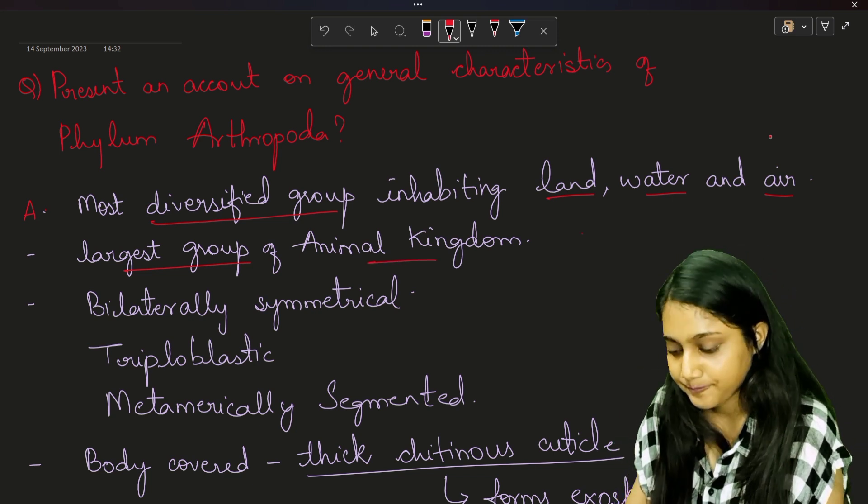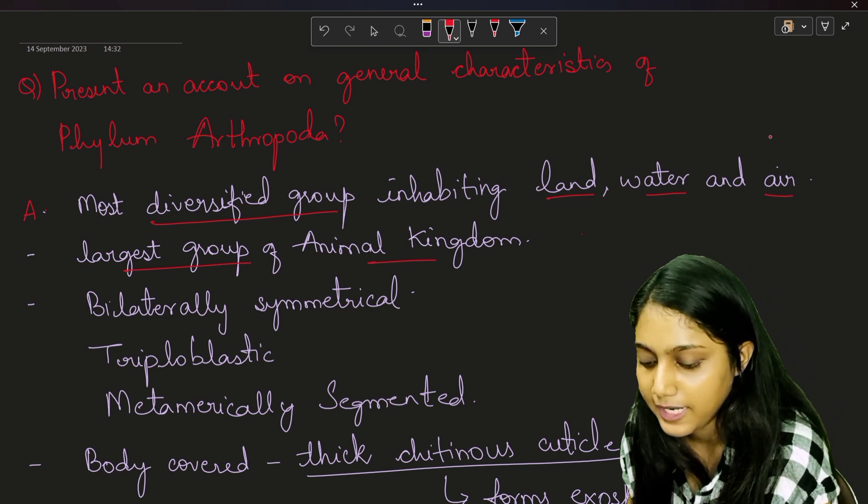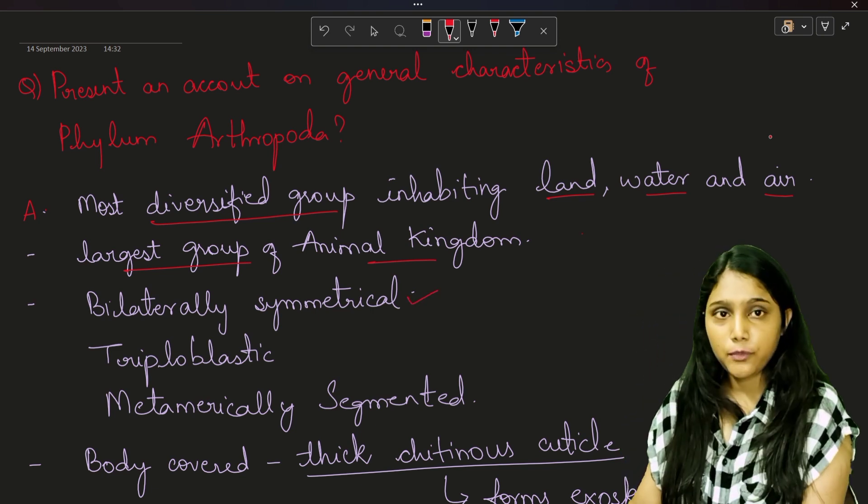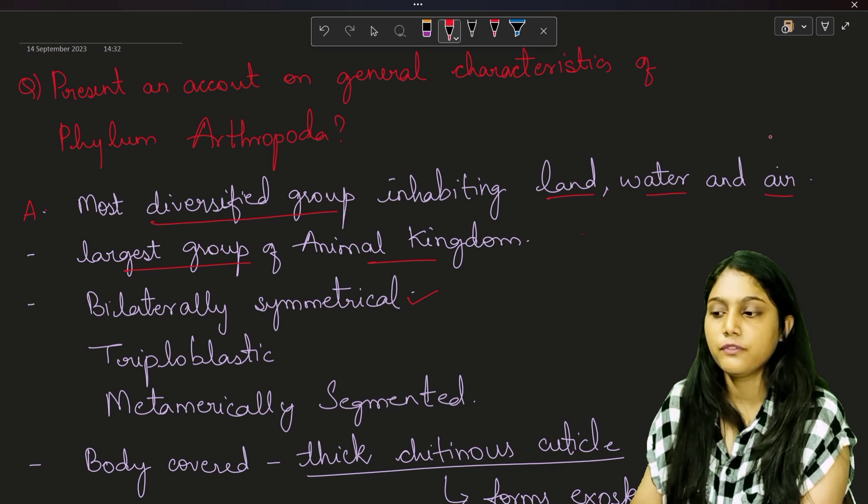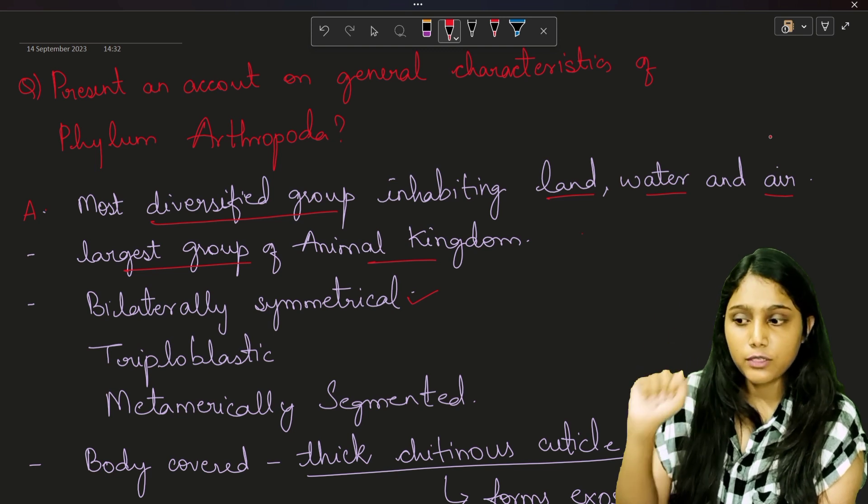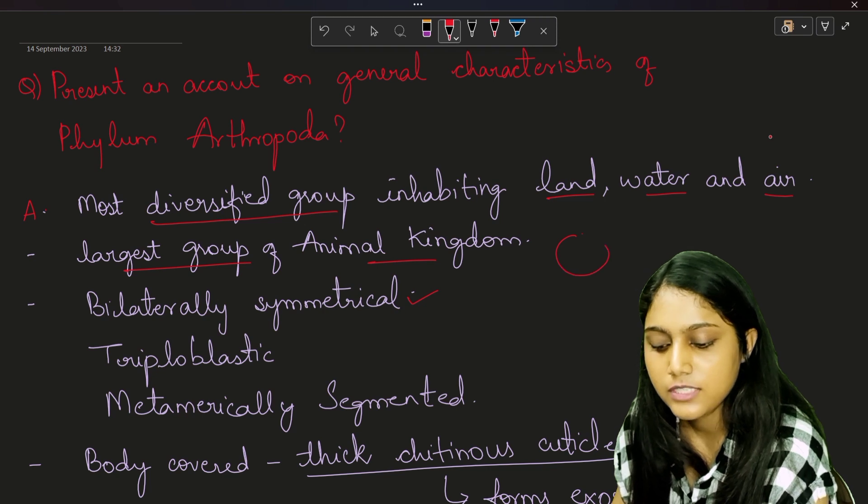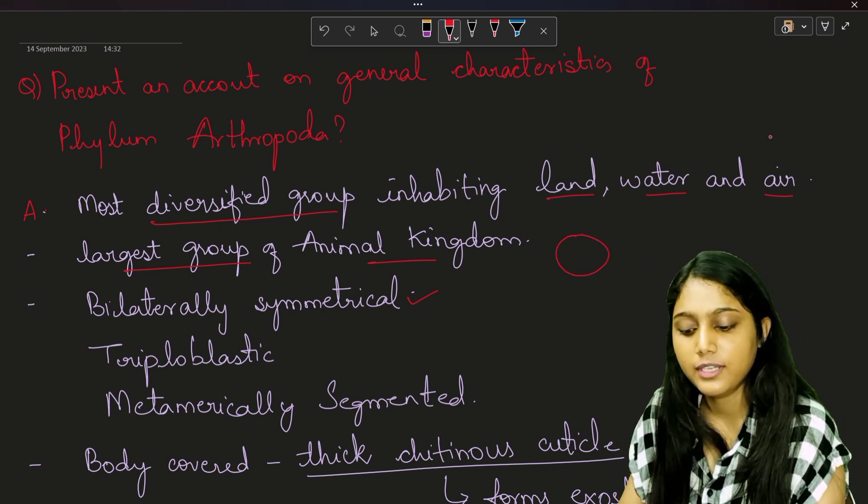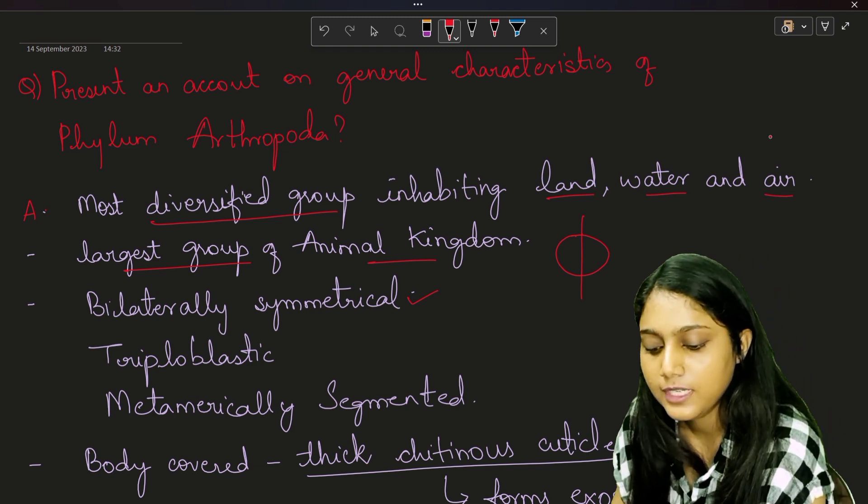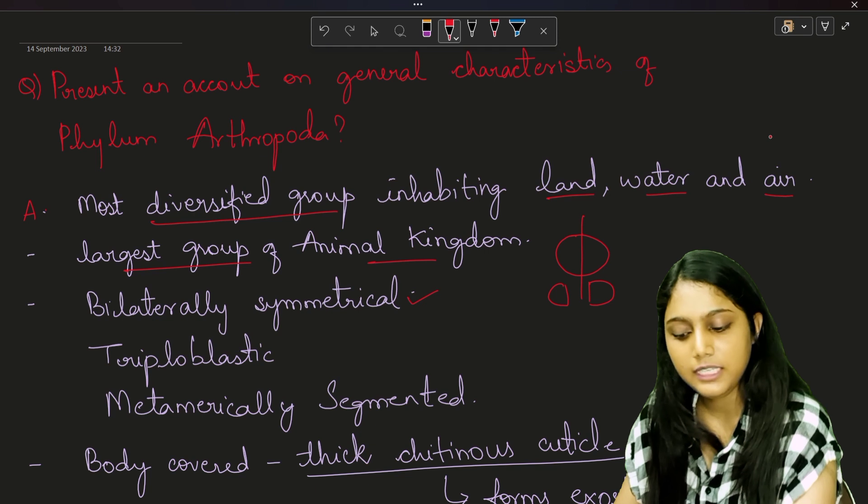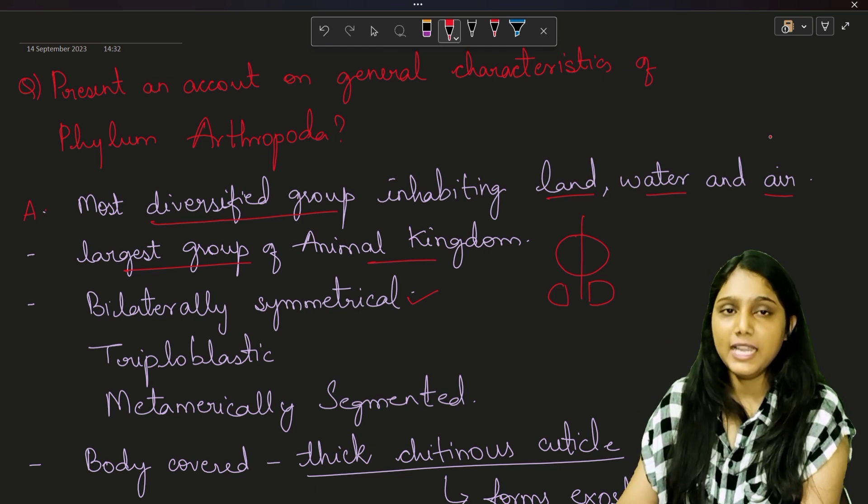Now we will talk about symmetry. So the organisms of Phylum Arthropoda are bilaterally symmetrical. Now what do you mean by bilaterally symmetrical organism? I have already made a video of symmetry, make sure to watch that. But for now let us talk about bilateral symmetry. If there is any organism, if you cut this organism from a single plane that passes through the central axis, you get equal right and left half of the organisms.